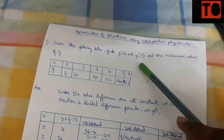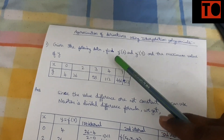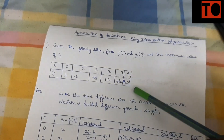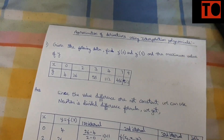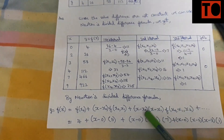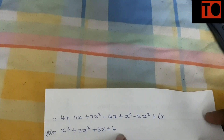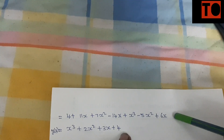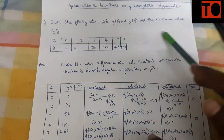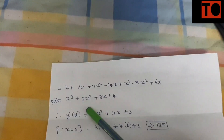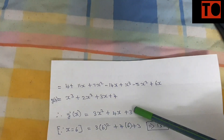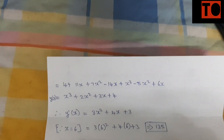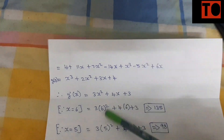Substitute y in the bracket, then substitute y dash. Once we substitute x, we expand the expression. Expanding gives: 4 plus 11x plus 7x squared minus 14x plus x cubed minus 5x squared plus 6x. Now we have the polynomial ready to differentiate for y dash.